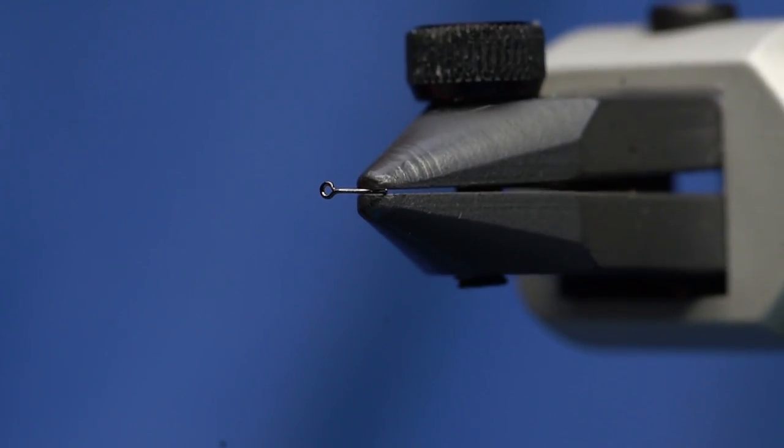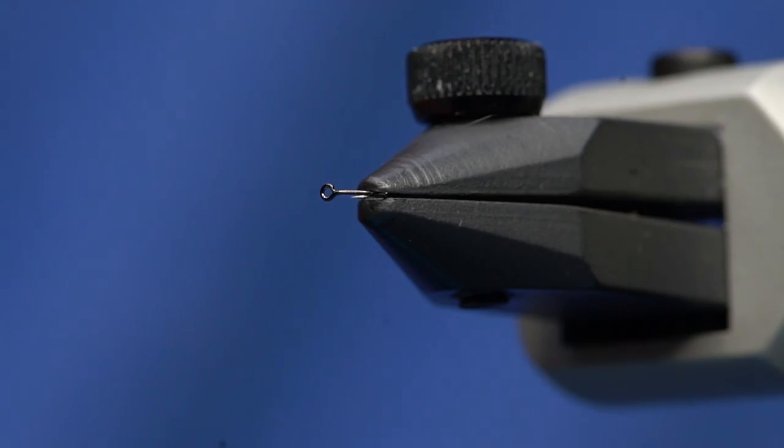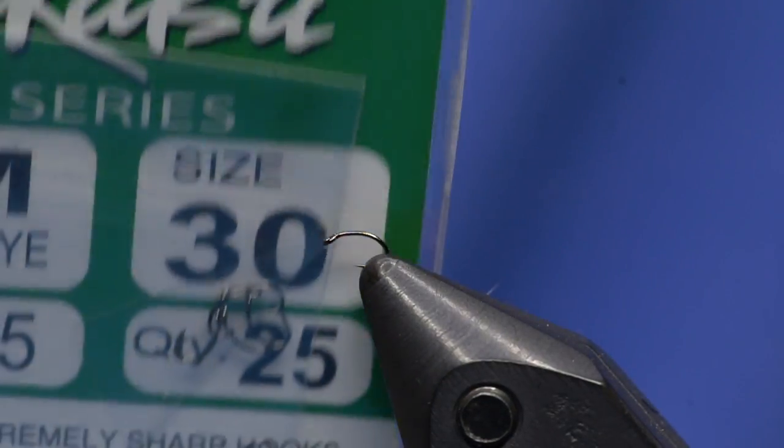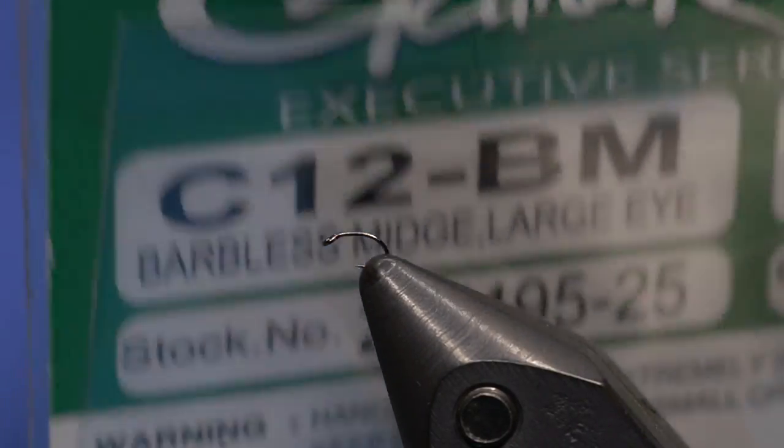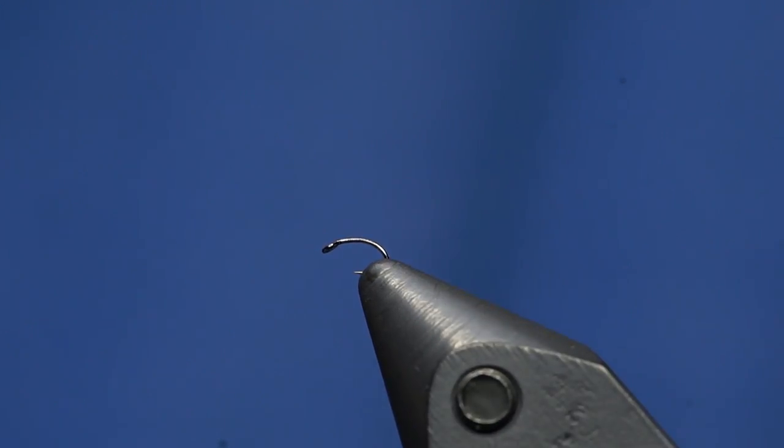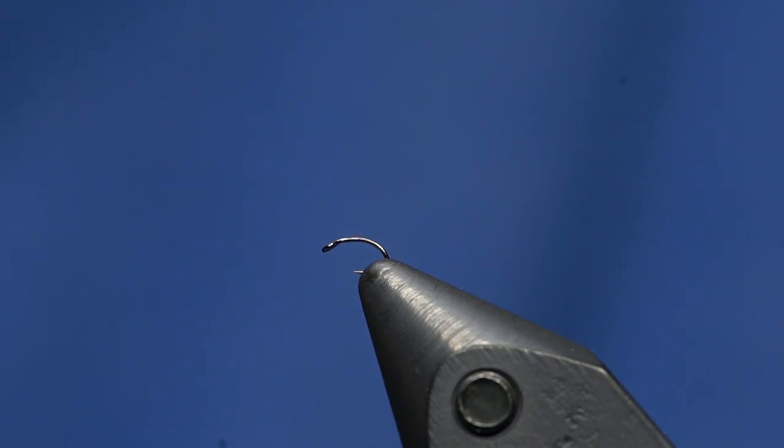As you can see, this has a pretty big eye. It's this Gamakatsu C12 BM hook, a really awesome midge hook. It's barbless and I've caught a bunch of fish on it. That's probably my go-to hook for a size 30 anymore since TMC stopped making the 518.